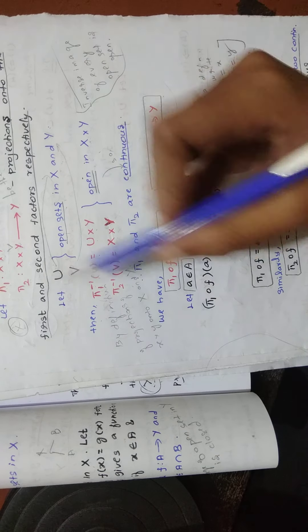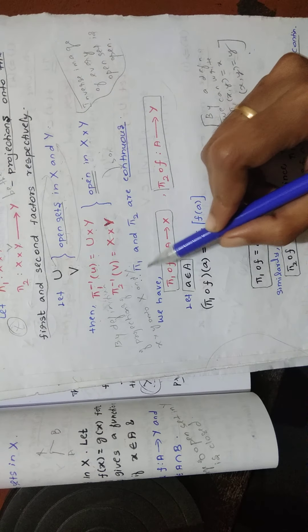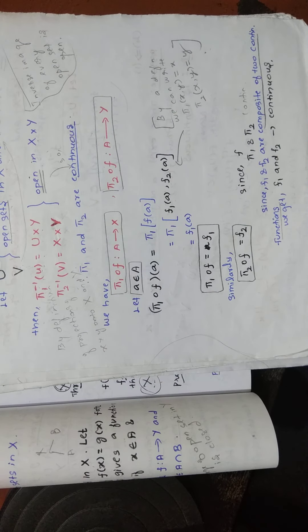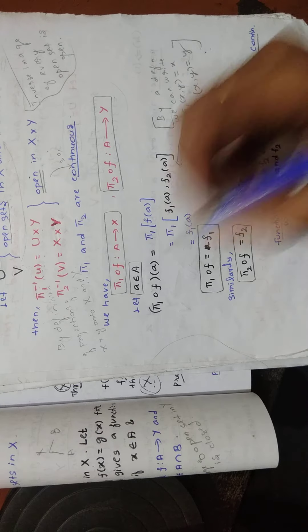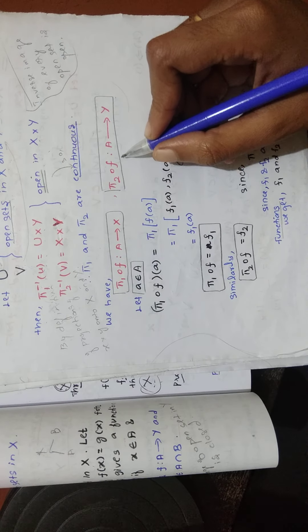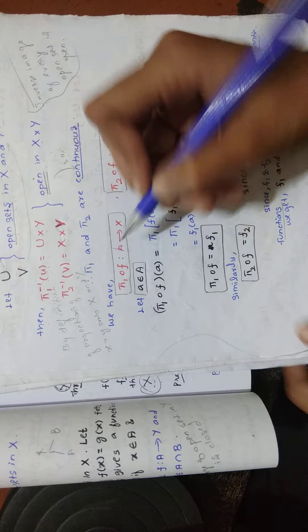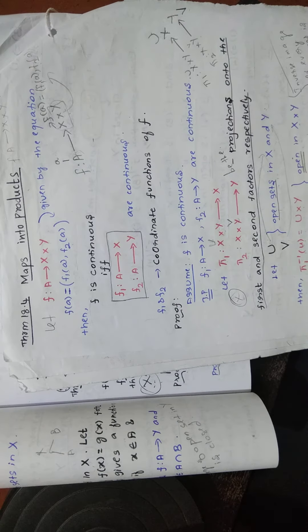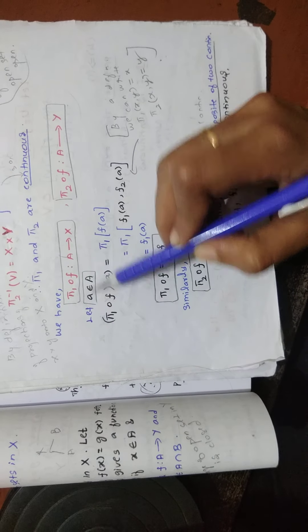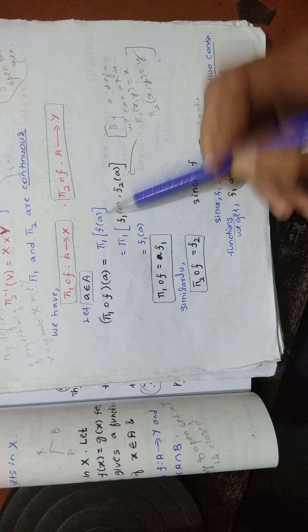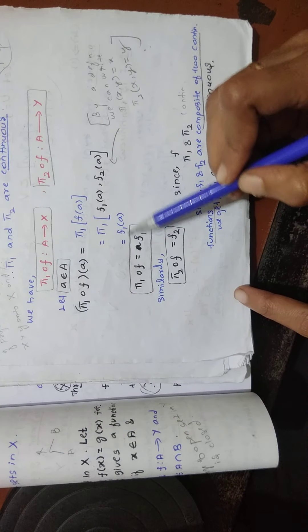Since the inverse images are open in X cross Y, we can say the functions are continuous. Therefore π₁ and π₂ are continuous. Now we have compositions: π₁∘f from A to X and π₂∘f from A to Y. Let a belong to capital A. Then (π₁∘f)(a) = π₁(f(a)) = π₁(f₁(a), f₂(a)) = f₁(a) by definition.